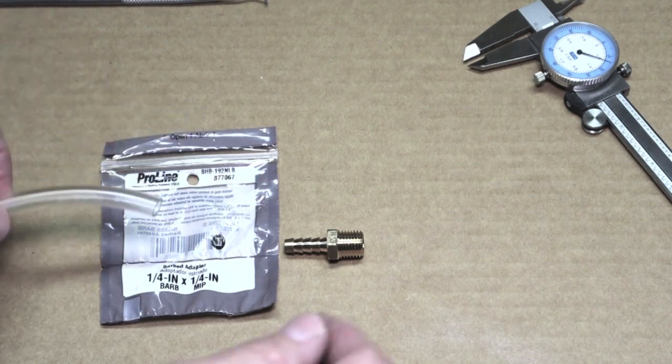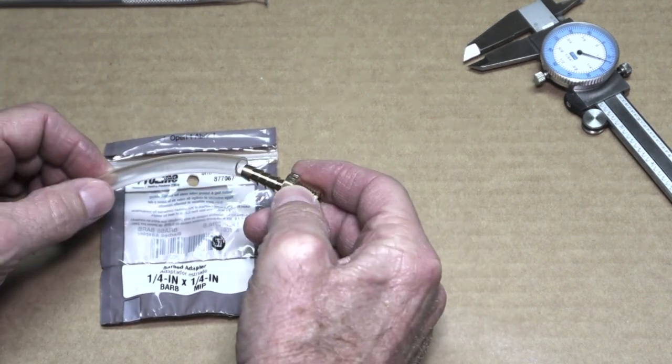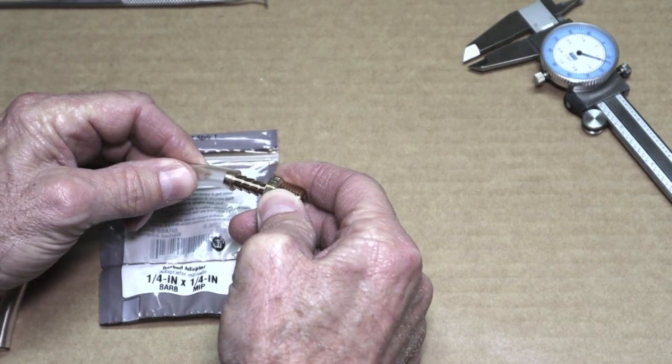This barbed fitting is made to accept a quarter inch inside diameter tubing. In this case, this is a piece of Tigon tubing. And I'm not going to put it all the way, but it's got a nice snug fit.